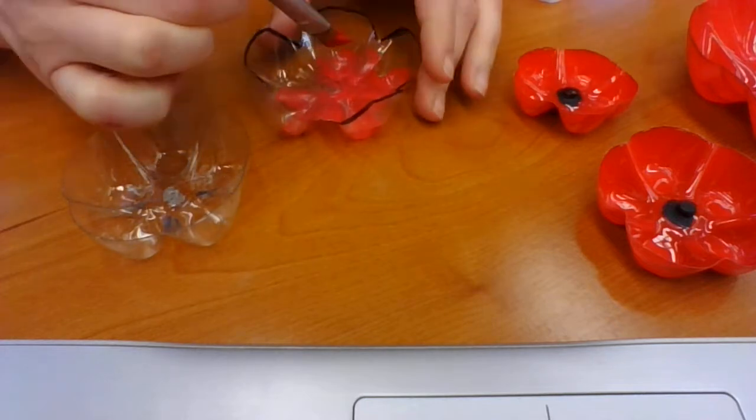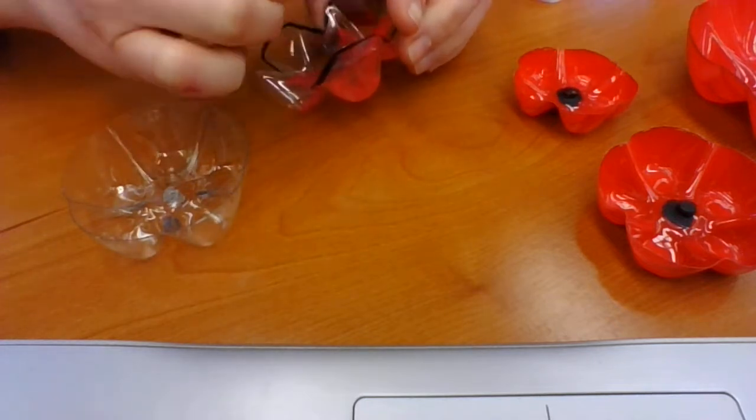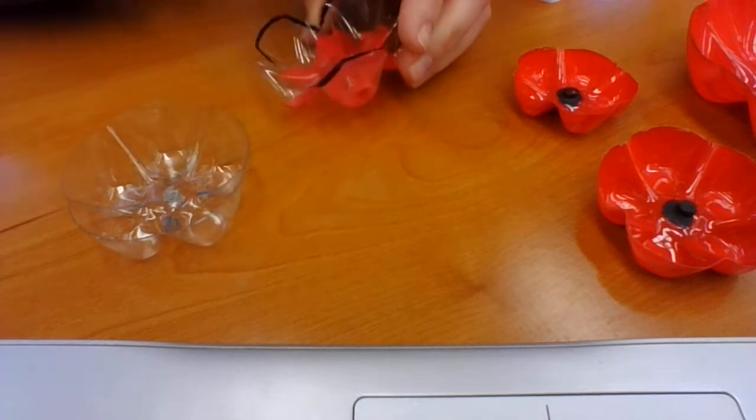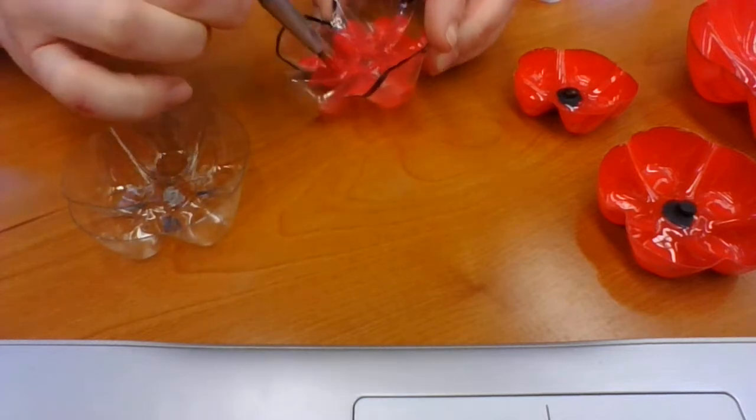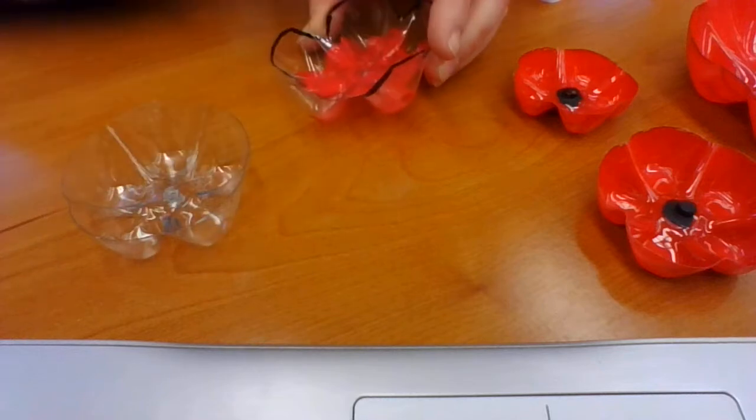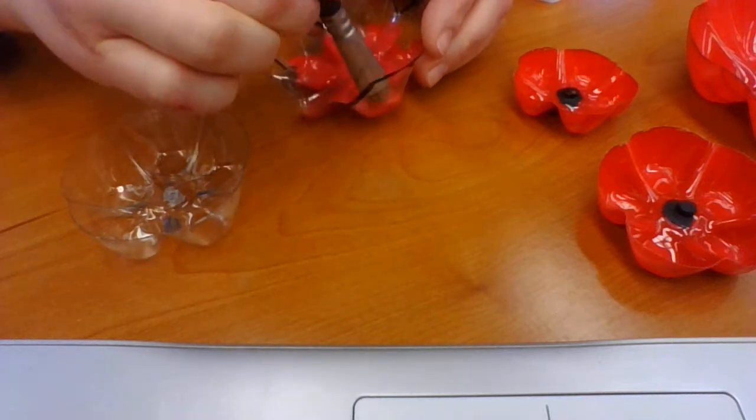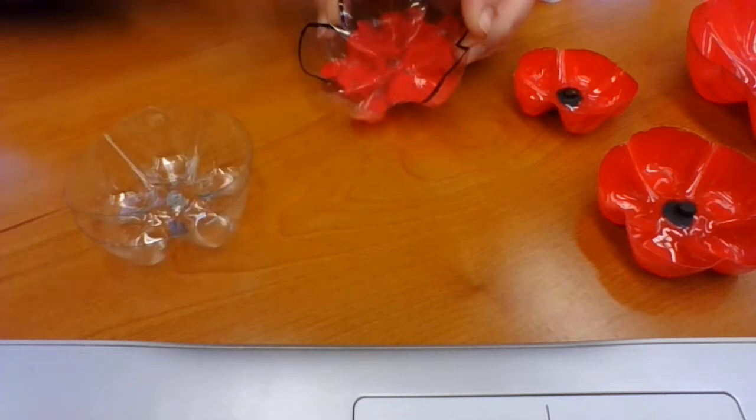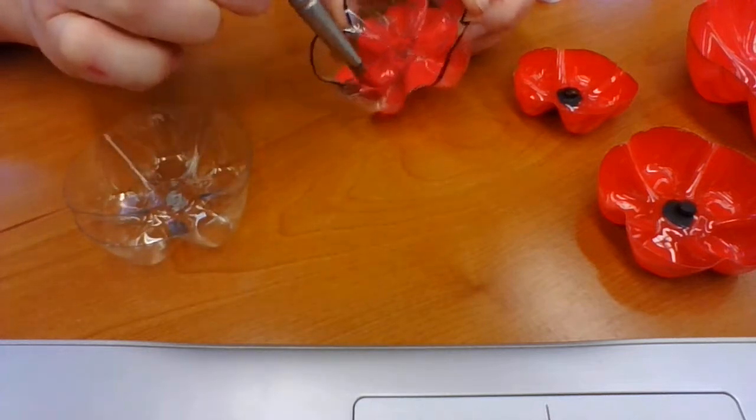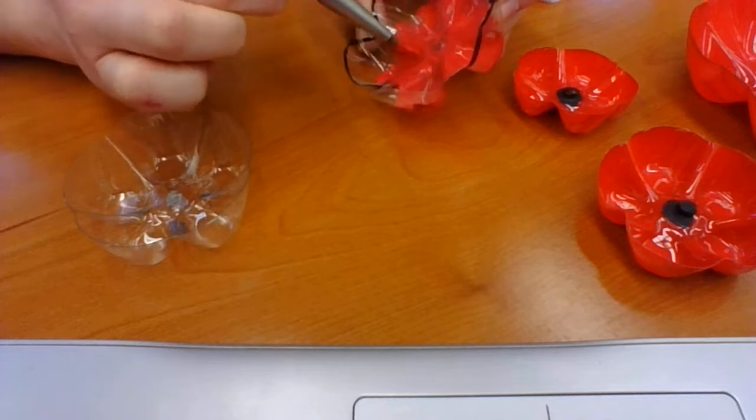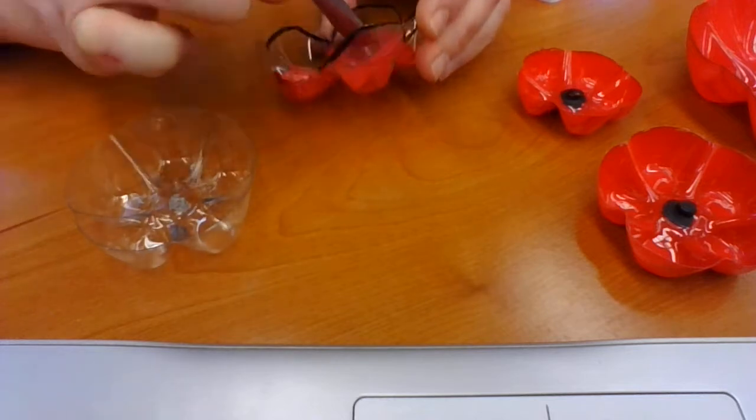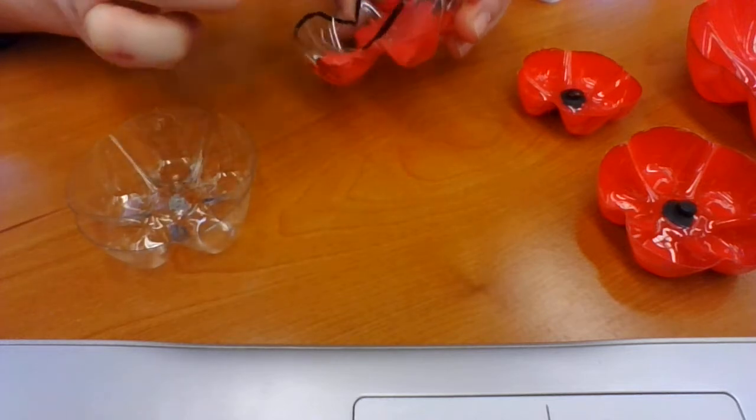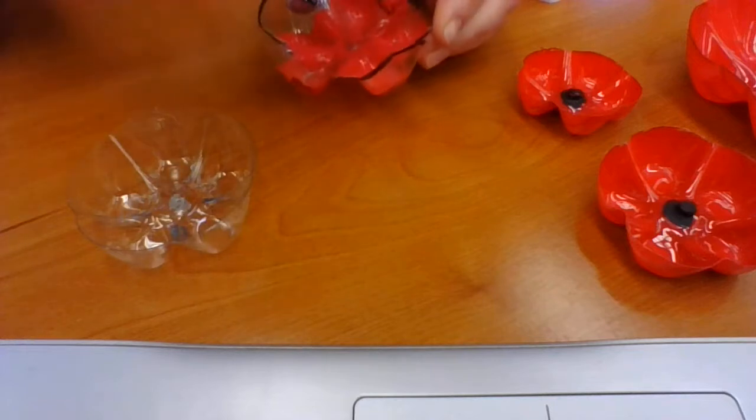These ones they use spray paint. This one I'm just doing acrylic, my craft paint. Do a thicker coat here. And there's lots of different versions of this online. Somebody was saying to do a white rim around the edge, whatever you want to do to decorate.